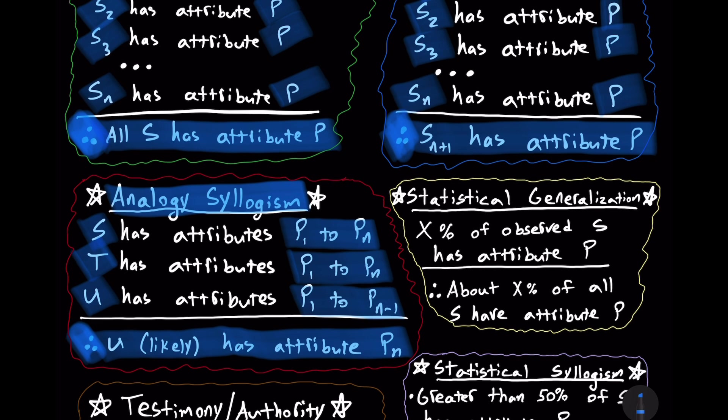And that's a judgment call. Moreover, other things being equal, the argument becomes stronger if the similarity is among multiple entities. Hence, if entities S and T have attributes one to N, entity U has attributes one to N minus one, then it is more likely than otherwise that U has attribute N. But again, relevancy is key. Relevancy. Not just the number of attributes, but relevancy. Are the attributes relevant? Such that we can make this analogy.